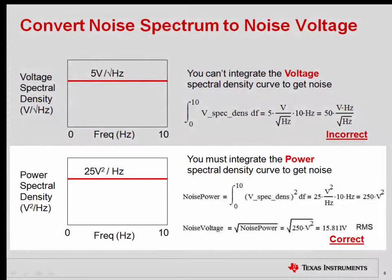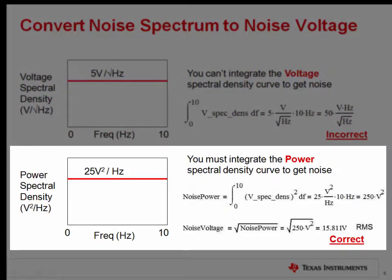The example at the bottom, on the other hand, integrates power spectral density. Again, remember that power is equal to V square divided by R for voltage, and I square times R for current. When integrating power spectral density and taking the square root of the result, you get the correct units of volts. Thus, when computing total noise, make sure to integrate the power spectrum.